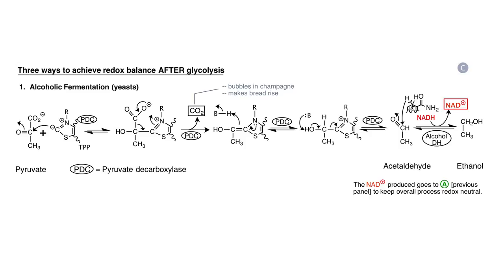The next enzyme in this small pathway is alcohol dehydrogenase, which utilizes NADH — derived in principle from the GAPDH step of glycolysis — to reduce the aldehyde functionality of acetaldehyde to form the product ethanol. Ethanol is an alcohol, hence the name alcoholic fermentation. Looking at this pathway in total, you form CO2 as a first product — which could be the bubbles in a carbonated beverage or what makes bread rise — and then ethanol as the other major product. You get your NAD+ back, which returns to glycolysis, specifically the GAPDH step, to enable processing of the next molecule of glucose.